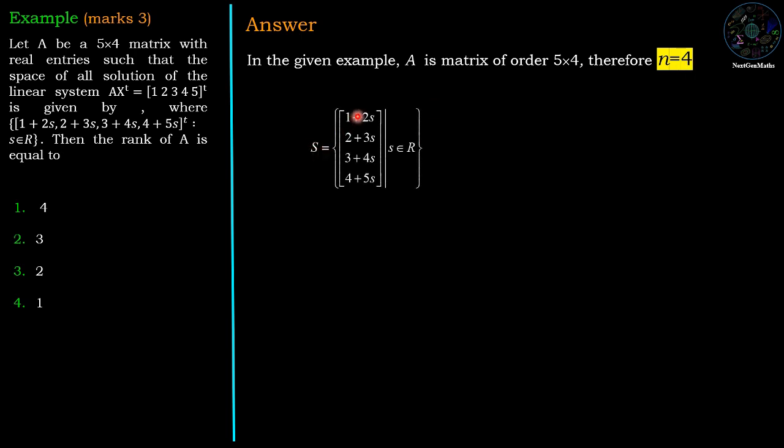Now the solution space is [1 + 2S, 2 + 3S, 3 + 4S, 4 + 5S]. If we rewrite this in two vector form: [1, 2, 3, 4] plus S times [2, 3, 4, 5].